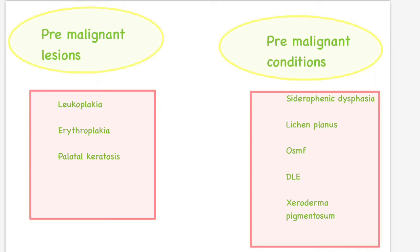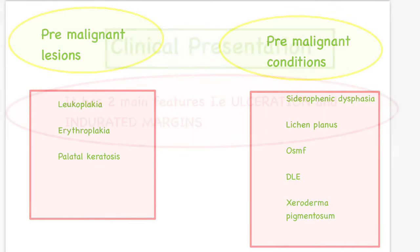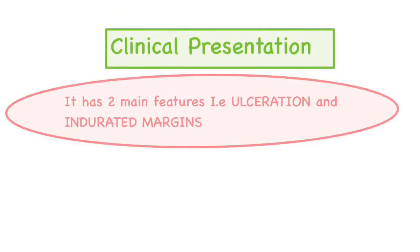Pre-malignant conditions include sideropenic dysphagia, lichen planus, oral submucous fibrosis, xeroderma pigmentosum, and discoid lupus erythematosus. Basically, in all these conditions, highly dysplastic changes occur in the epithelium, which makes these conditions susceptible for development of malignancy.